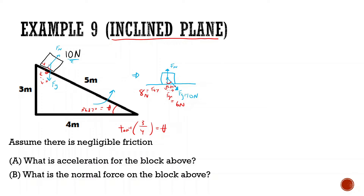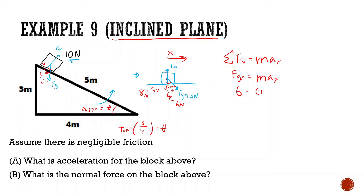Now, it's going to be accelerating in the x direction — that's the way it's accelerating. It's not going to be accelerating in the y direction at all because the surface is there. So we look at everything in the x: sum of all forces in x equals mass times acceleration in x. We only have one force in x — force of gravity in x equals mass times acceleration. Force of gravity in x is 6, mass is 1 kilogram since weight is 10 newtons, so acceleration equals 6 meters per second squared.